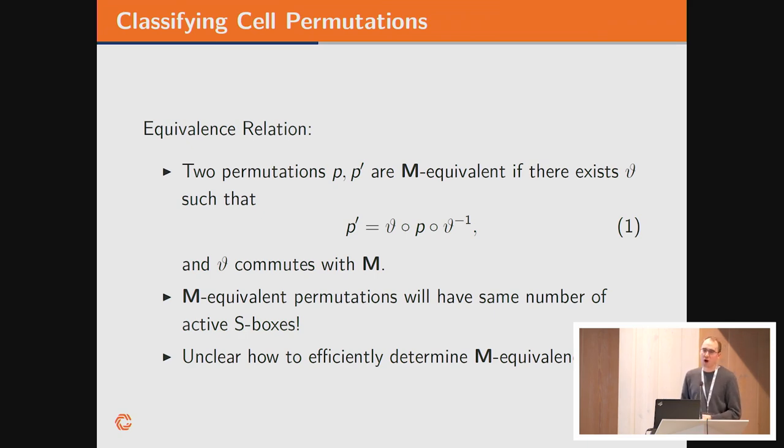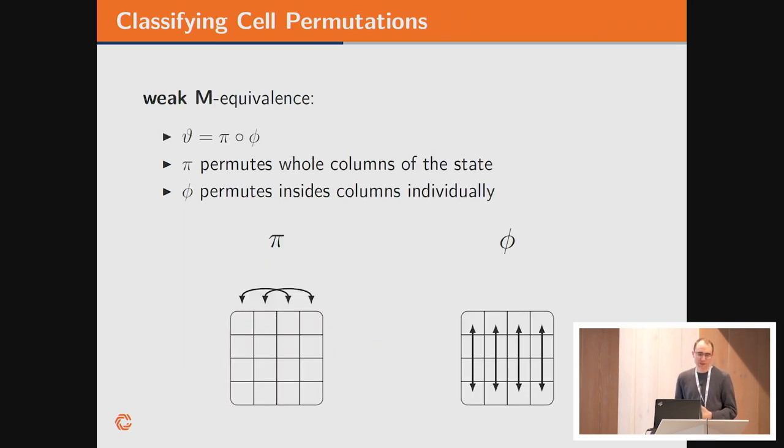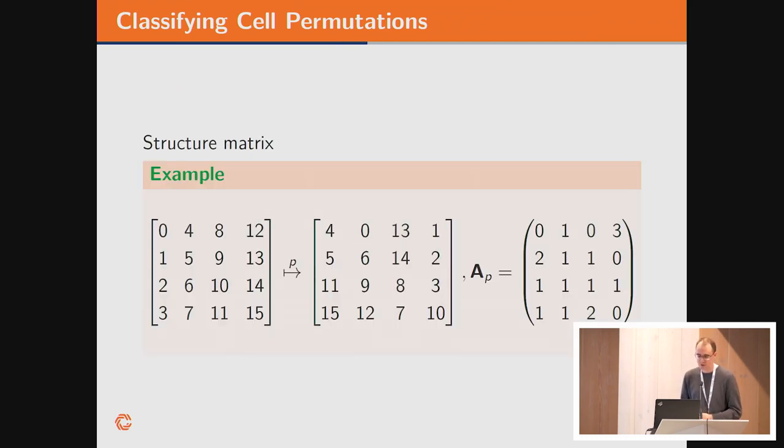We use this to define an equivalence relation. We say we have two permutations, P and P prime, and they are M equivalent if such a theta exists with these properties. The nice conclusion from this is all permutations which are M equivalent will have the same number of active S-boxes. There's some drawback because we don't actually know how to test M equivalence between permutations. So we have to go a few more steps. We make the job a bit easier. We first look at a weaker equivalence relation, which we call weak M equivalence. The only difference here is theta has now a structure. We say theta is composed of two permutations, phi and pi. Pi only permutes the columns with each other, and phi only permutes elements inside each column independently. So if theta is of this form, then two permutations are weak M equivalent.